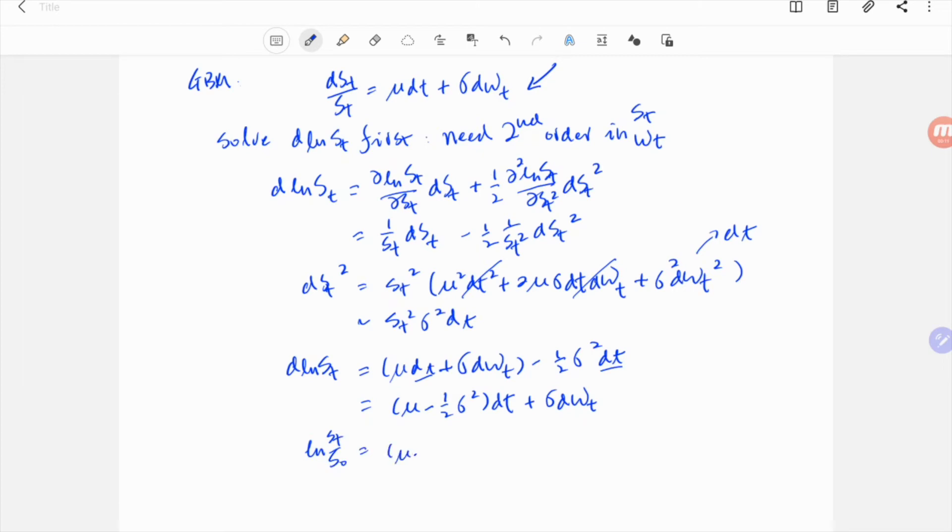And integrate both sides. We get st equals exponential mu minus half sigma squared t plus sigma wt with some boundary conditions.